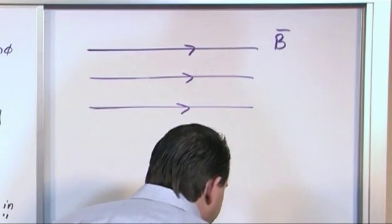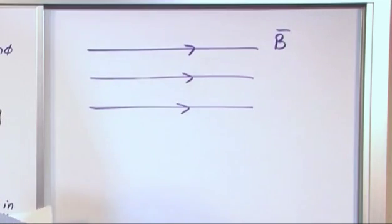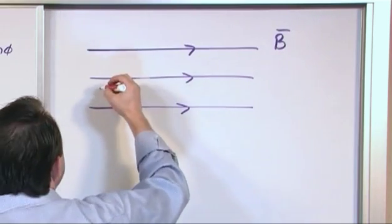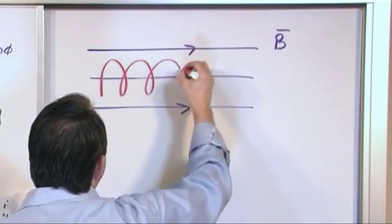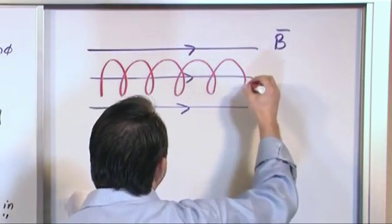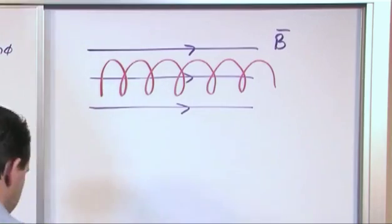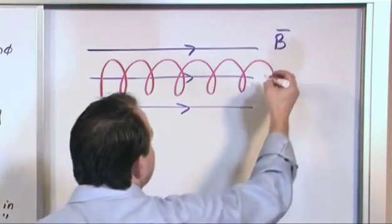Well, I'll give you the punchline. What's going to happen is you're still going to get orbiting, but the particle is going to orbit, and as it orbits, it's going to travel down the magnetic field lines. Think about that for a second. Make sure you understand that.